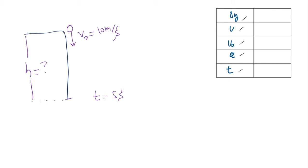Finding the height of the cliff means we are looking to find delta y. The reference frame is very important — we need to know what is our origin, what is y positive, y negative, etc. Our origin, all the time, we take it to be the initial position of the object and call it y0 equals 0. Taking your origin as 0 makes the problem easier to solve.